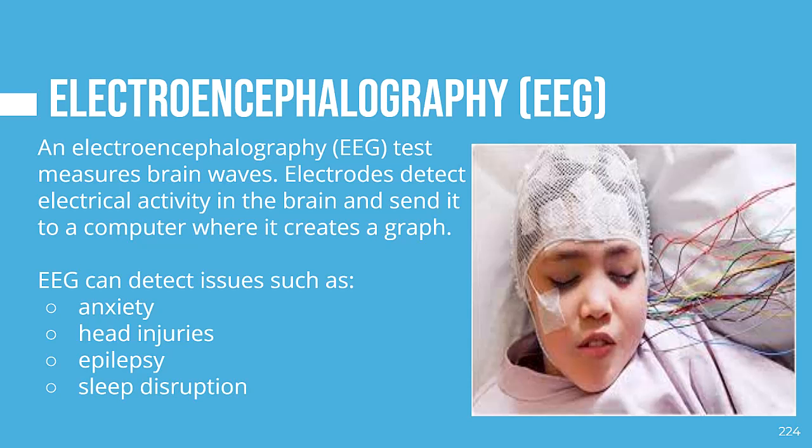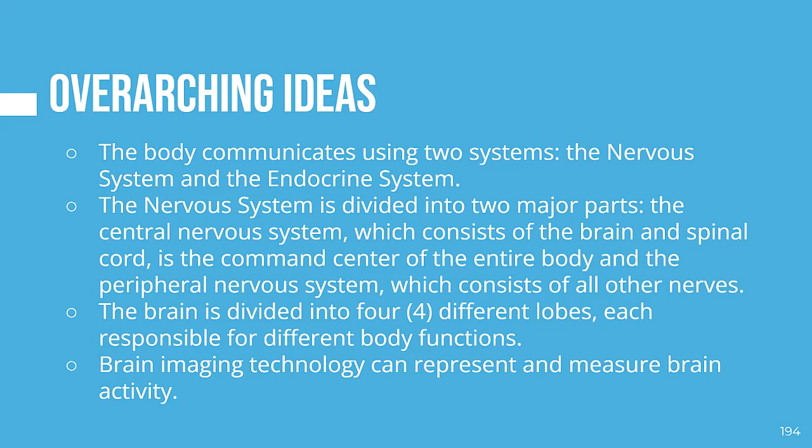In today's video, we learned that the body communicates using two systems: the nervous system and the endocrine system. The nervous system is divided into two major parts — the central nervous system, consisting of the brain and spinal cord, is the command center of the entire body; and the peripheral nervous system, consisting of all other nerves. The brain is divided into four different lobes, each responsible for different body functions. Finally, brain imaging technology can represent and measure brain activity.